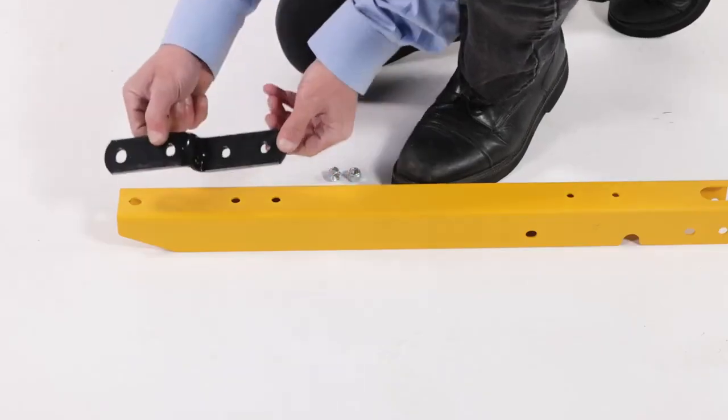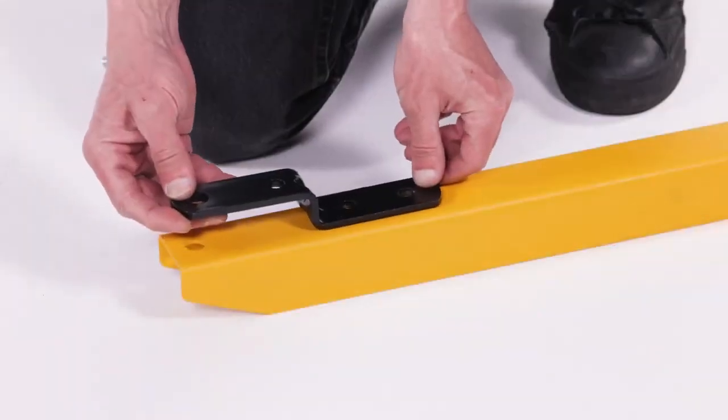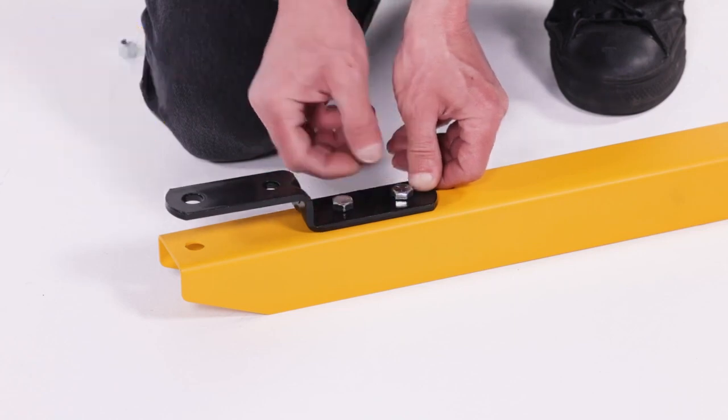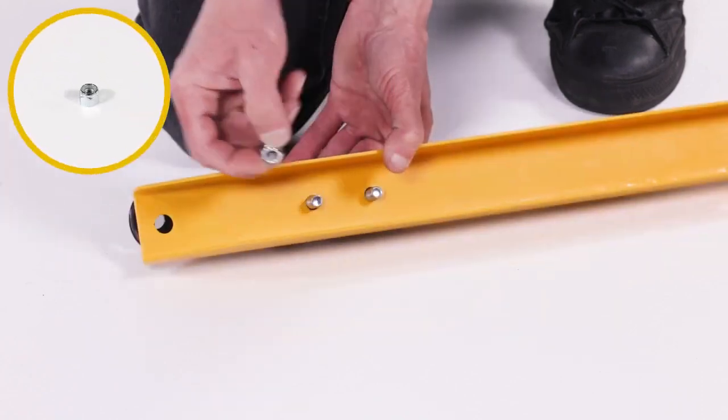Begin by aligning the hitch bracket, Part 9, with the front tongue, Part 4, then fully secure it with 2 3/8 by 1 inch bolts, Part C, and 2 3/8 inch Nylok hex nuts, Part M.